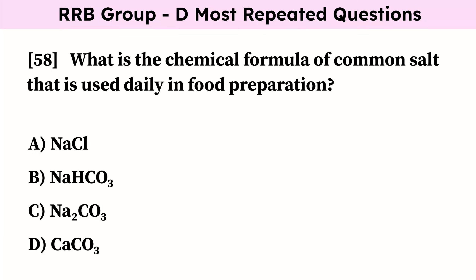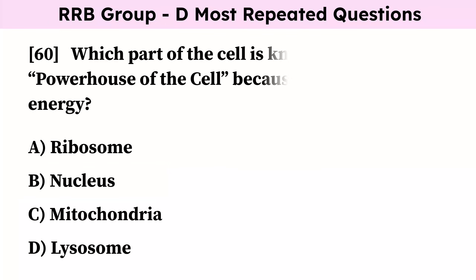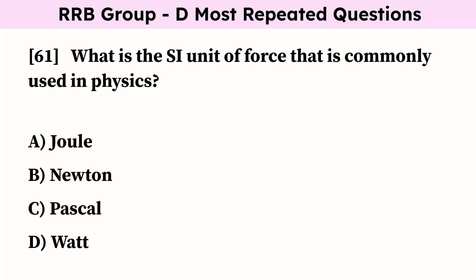What is the chemical formula of common salt used daily in food preparation? Correct answer is NaCl. In an electric circuit, which device is used to measure the amount of electric current flowing through the circuit? Correct answer is ammeter. Which part of the cell is known as the powerhouse of the cell because it produces energy? Correct answer is mitochondria. What is the SI unit of force commonly used in physics? Correct answer is Newton.